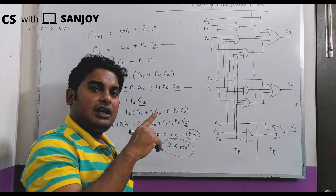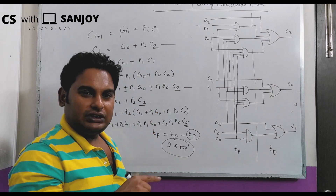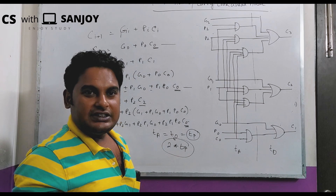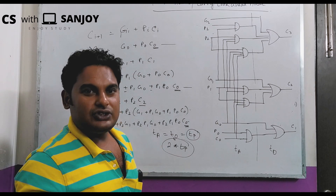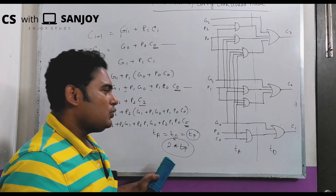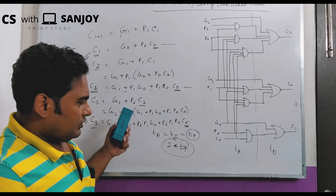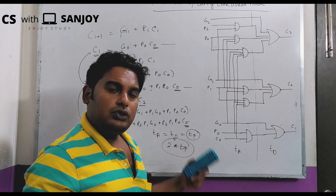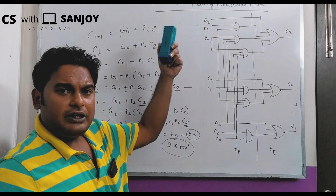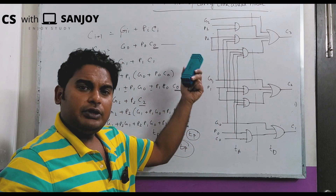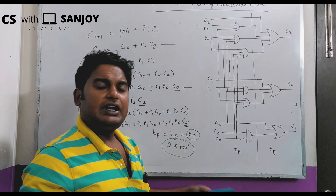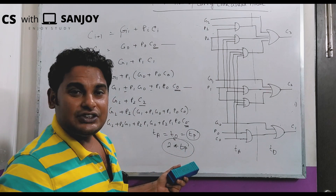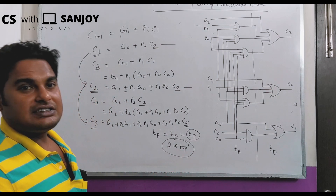Compare this to the ripple adder: for an n-bit ripple adder, the delay is n × T_P. So for 4-bit it's 4·T_P, for 64-bit it's 64·T_P. But for the carry look-ahead adder, whether it's 3-bit, 4-bit, 8-bit, 64-bit, or n-bit, the delay is always 2 × T_P.